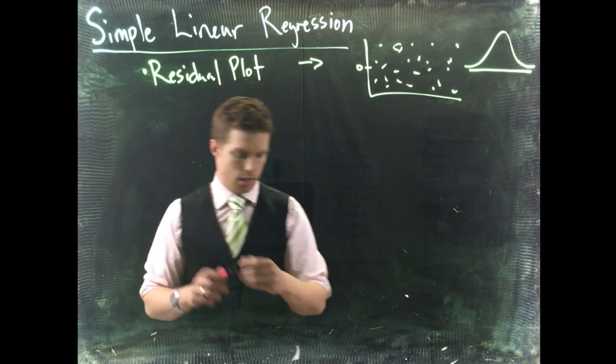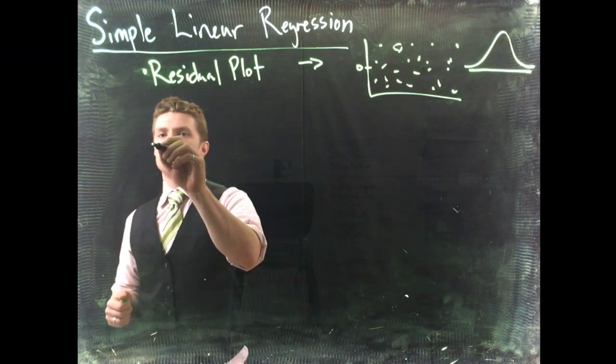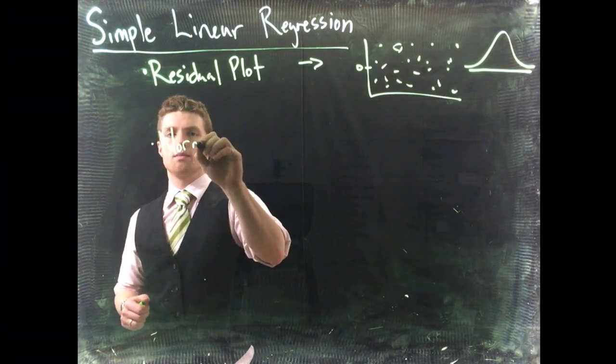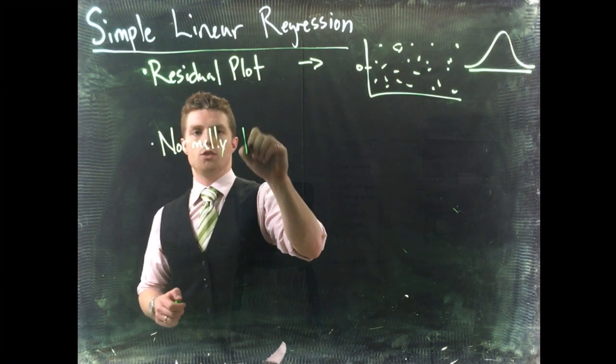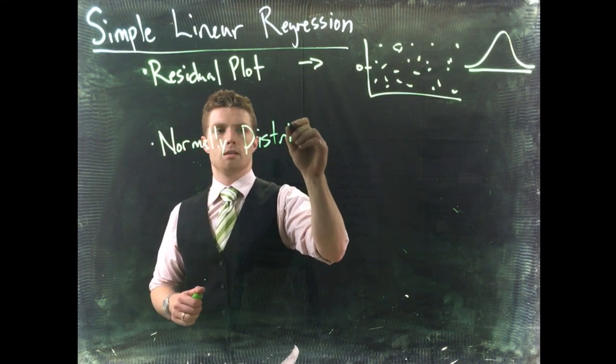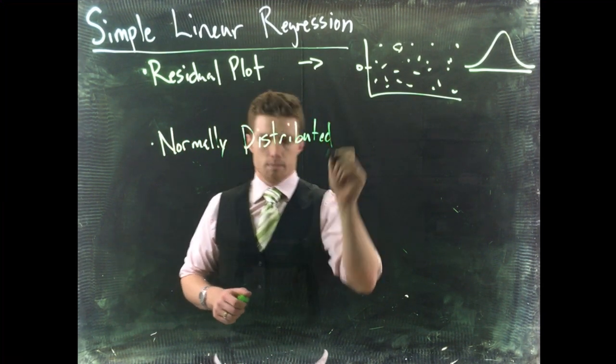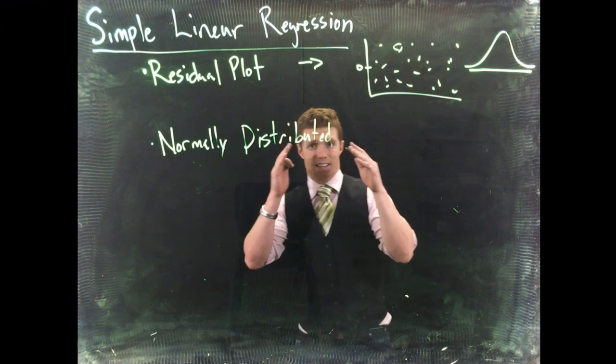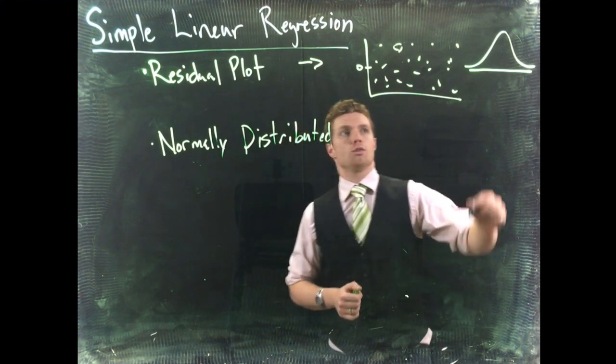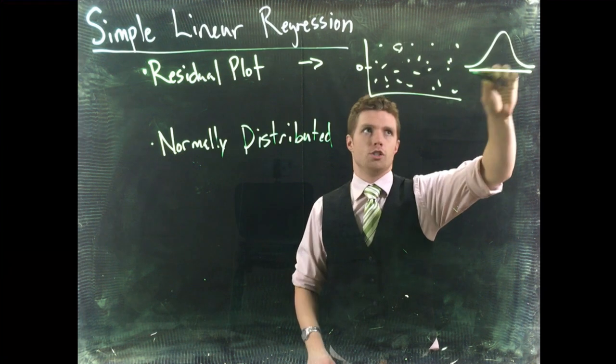First one is we need our residuals to be normally distributed. Let's put that up. Normally distributed. Okay, but it's different now. So traditionally, when we talk about normal distribution, you're looking for the bell curve.